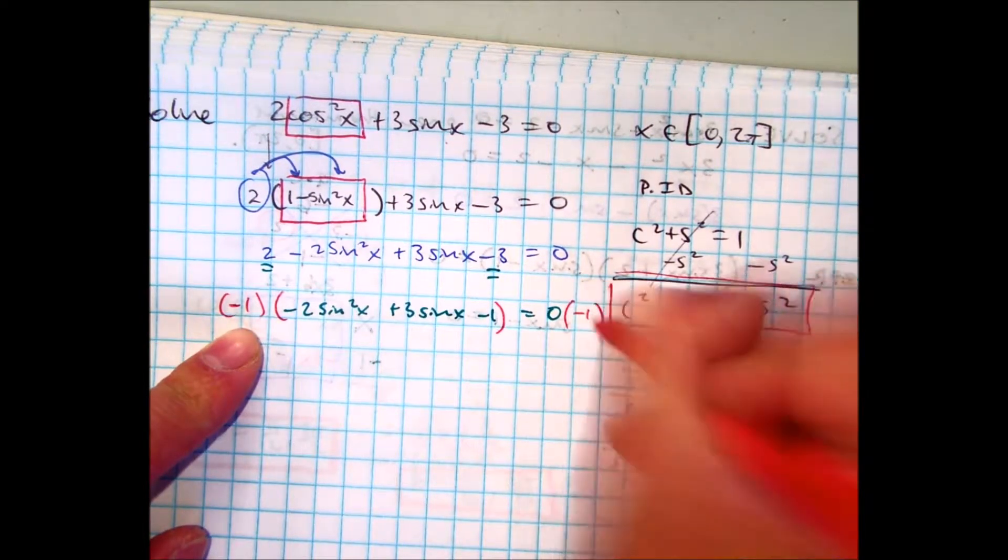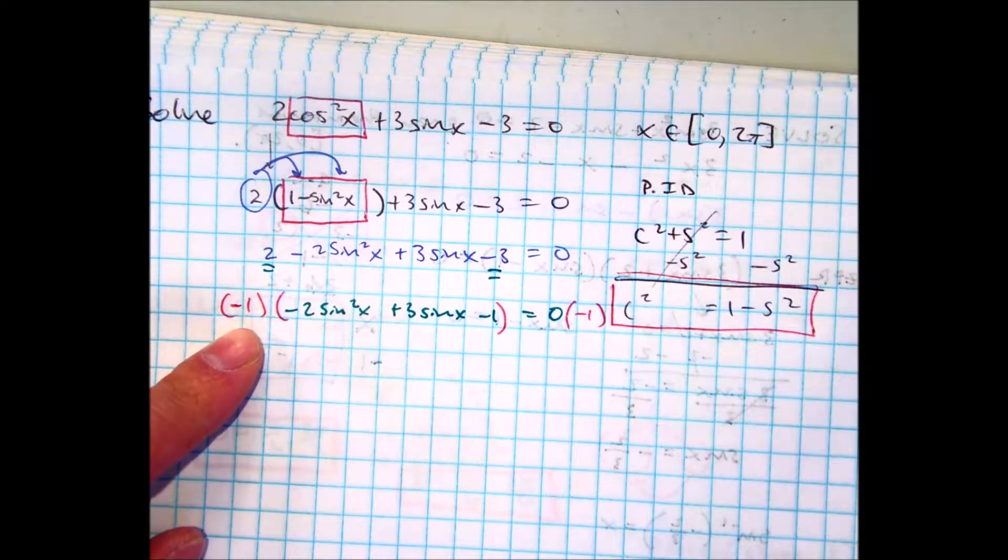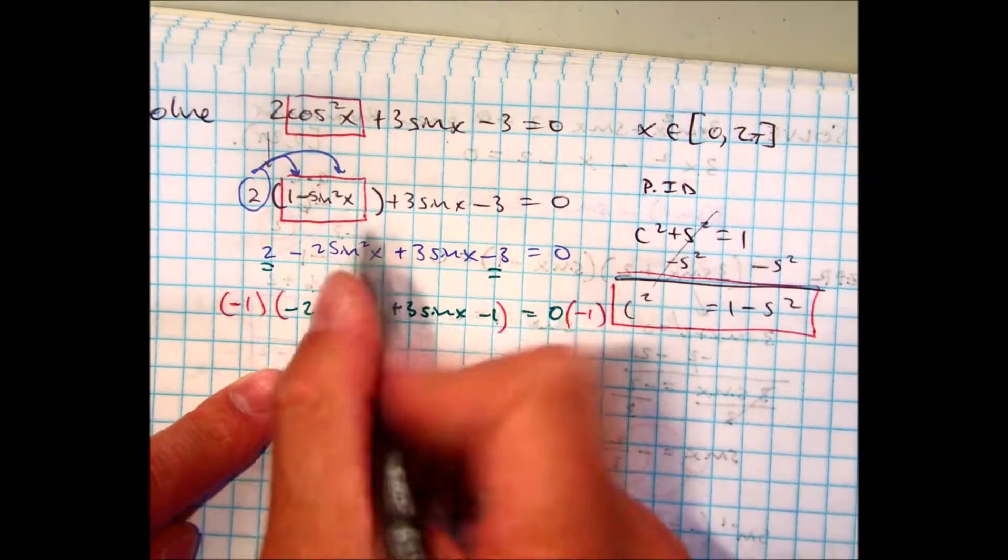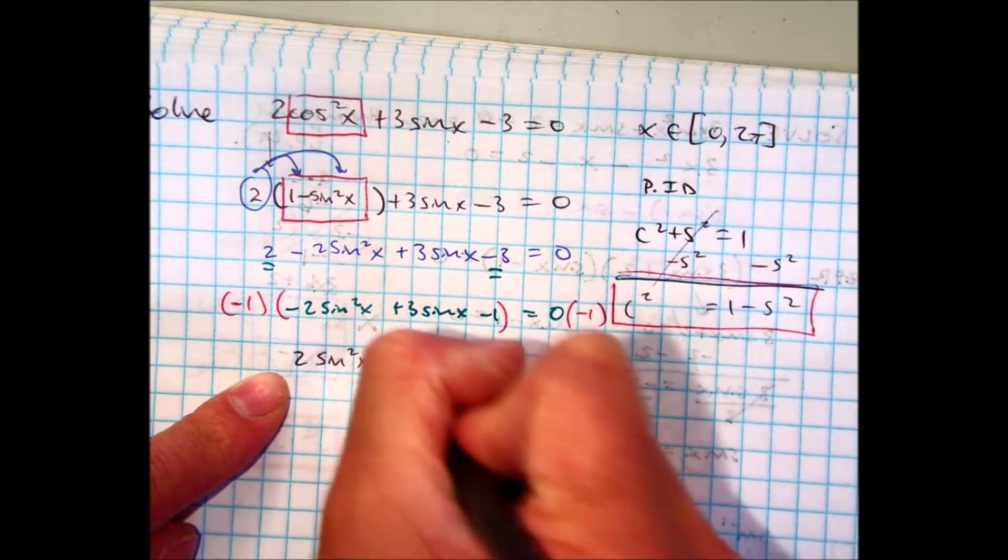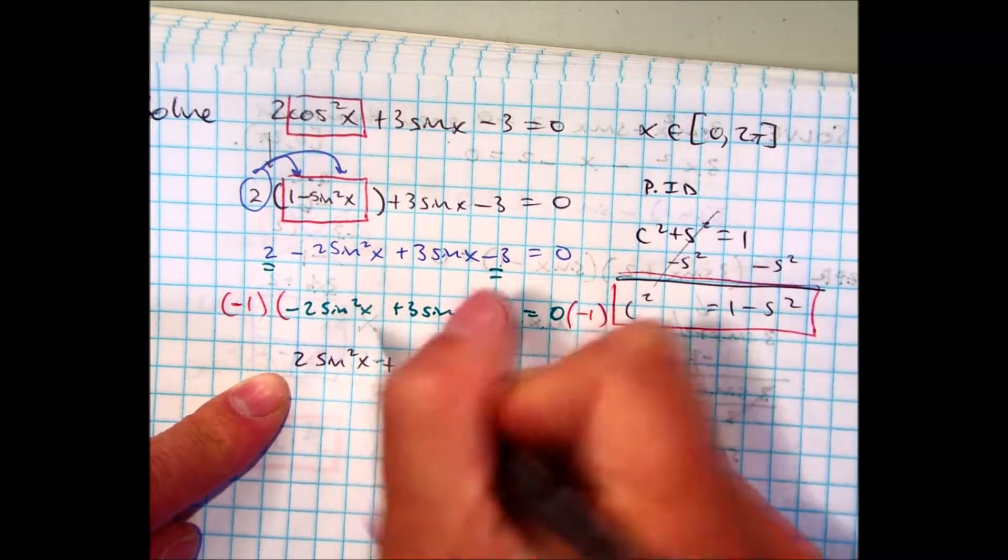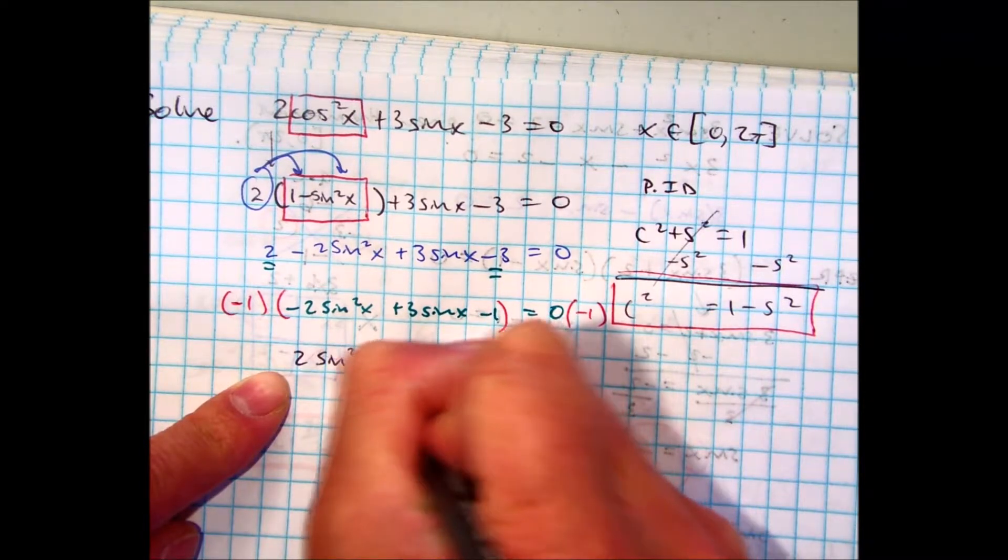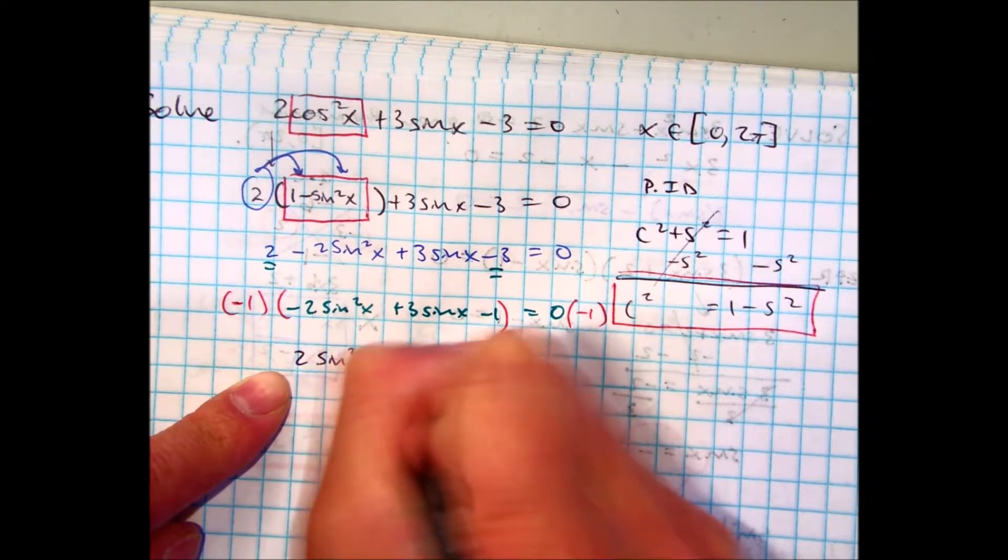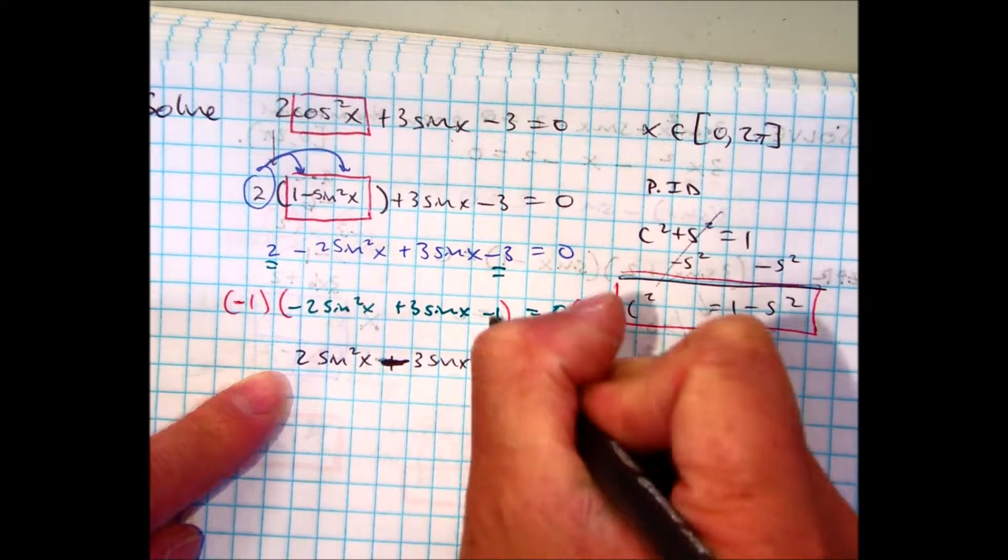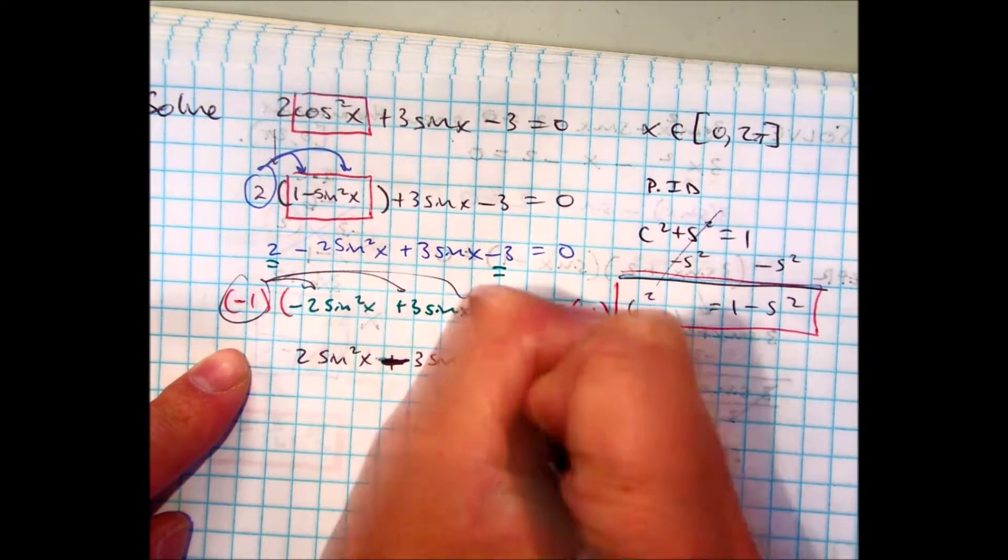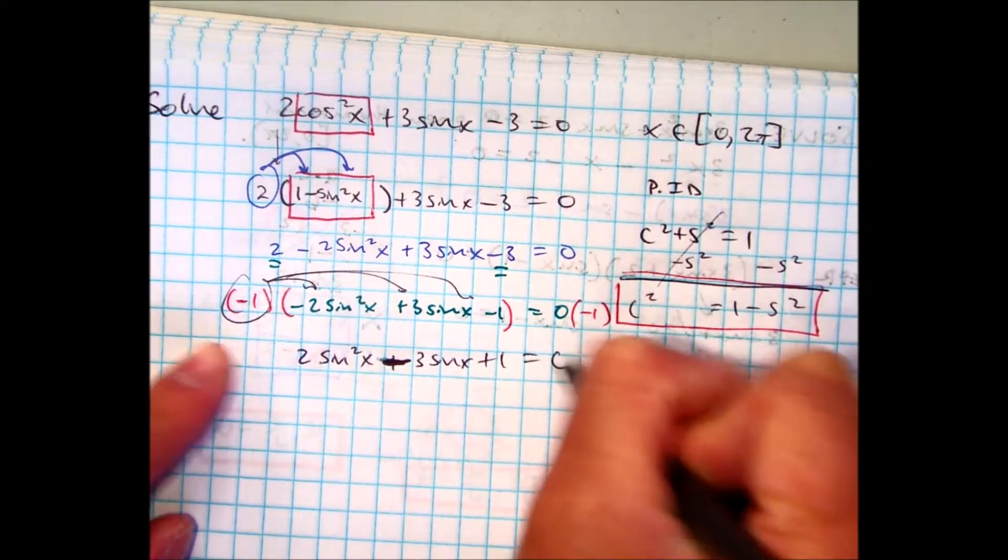By multiplying by negative 1, what does it do? It just changes all the math operations. So, now I get 2 sine squared x minus 3 sine x plus 1 equals 0.